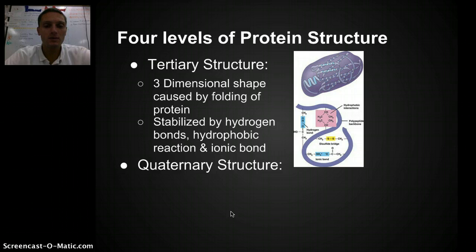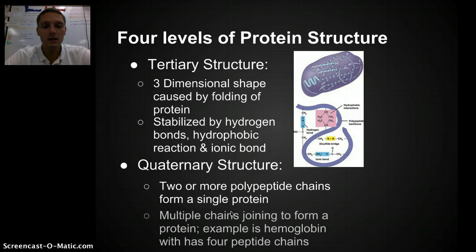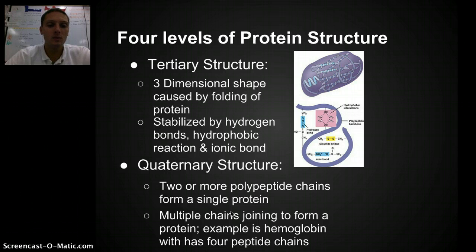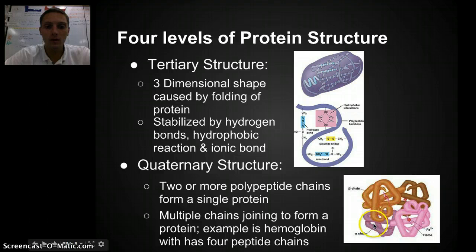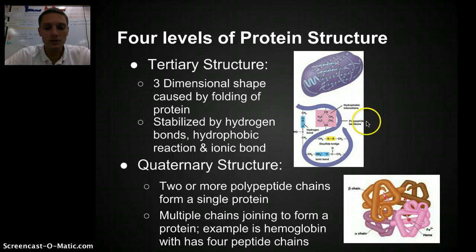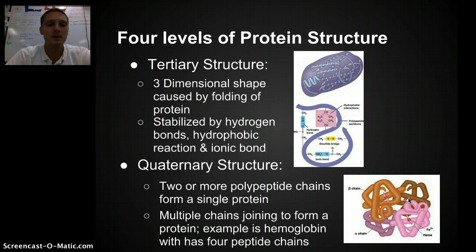Our fourth structure is called the quaternary structure. This is when two or more polypeptide chains form a single protein — multiple chains joining to form a protein. A good example is hemoglobin, which has four peptide chains. We've got four different peptide chains coming together to form our protein, with multiple folded structures combining to form the final protein. This would be an example of quaternary structure.